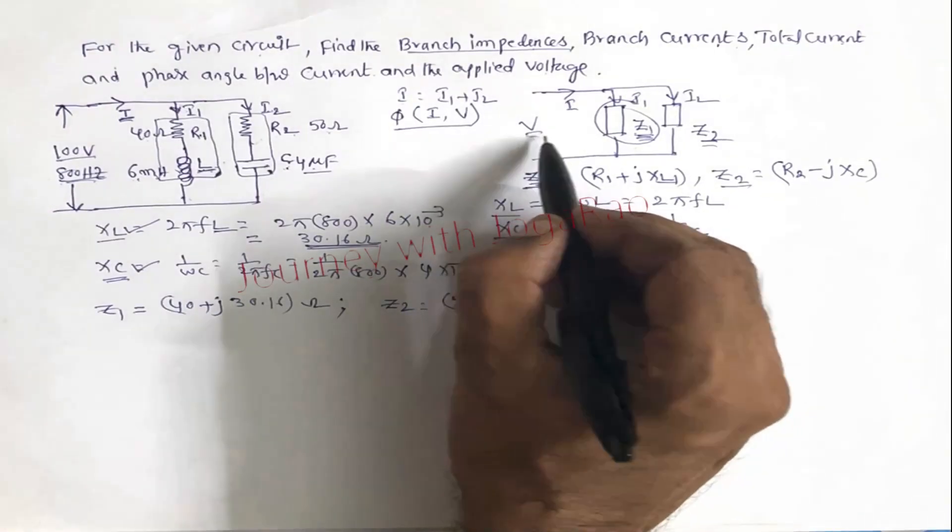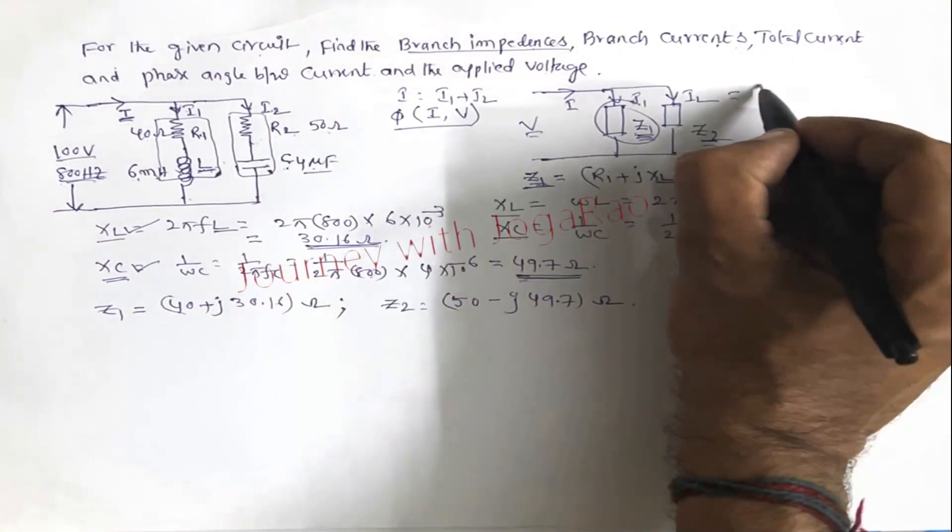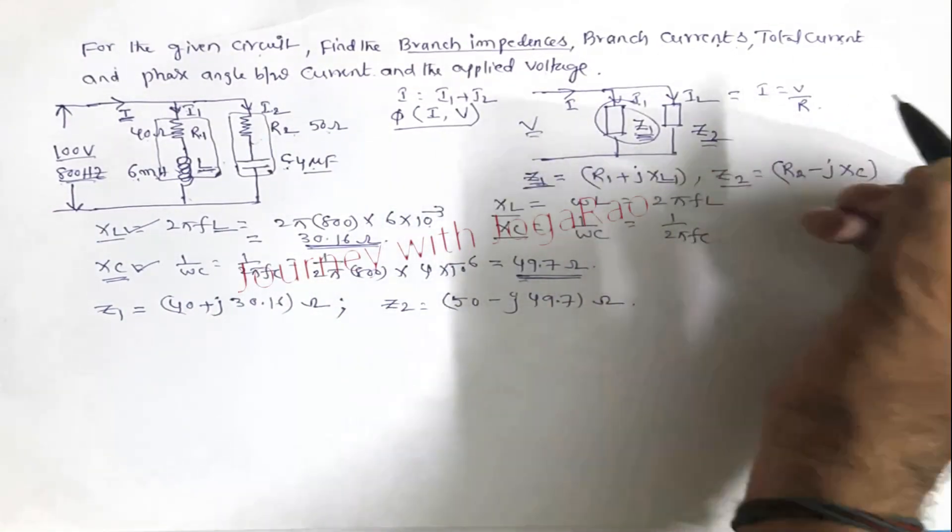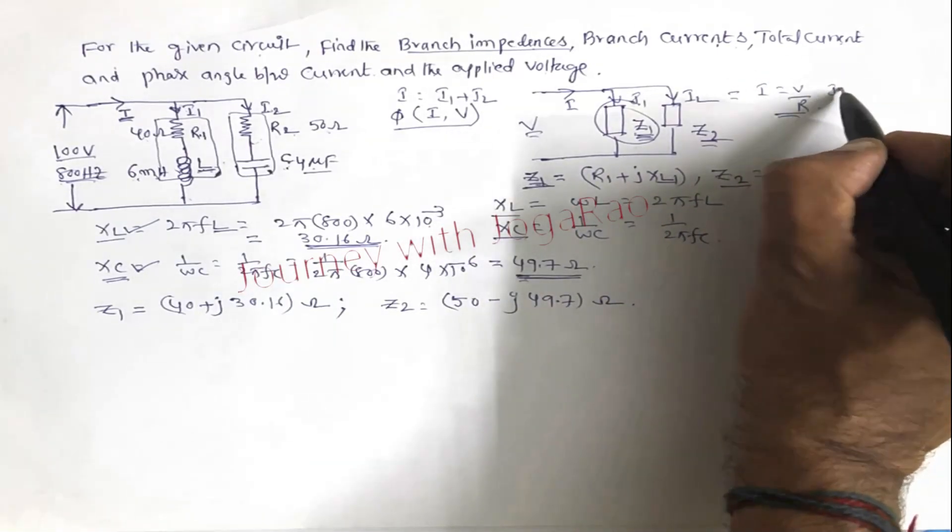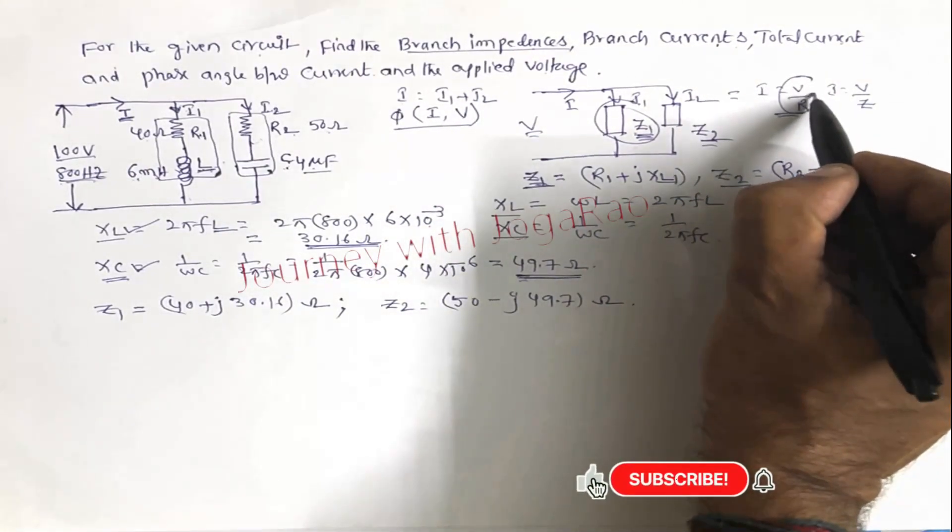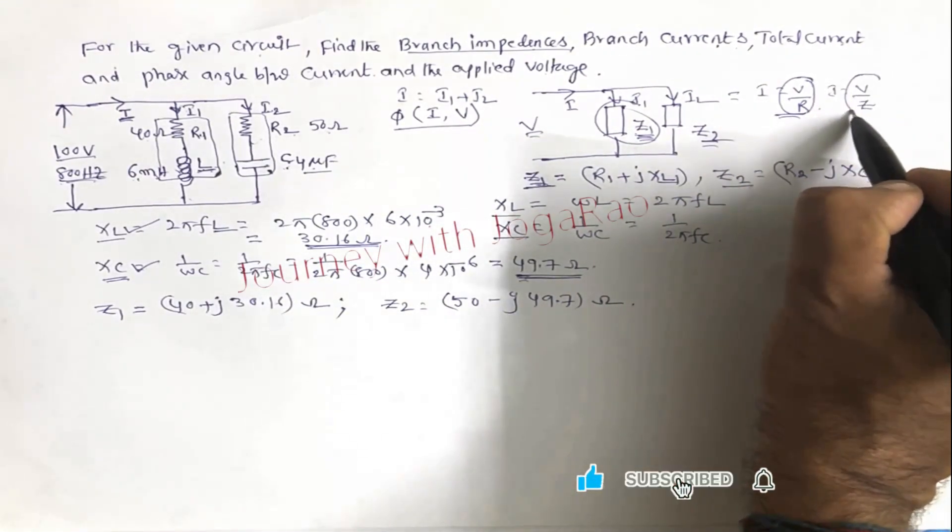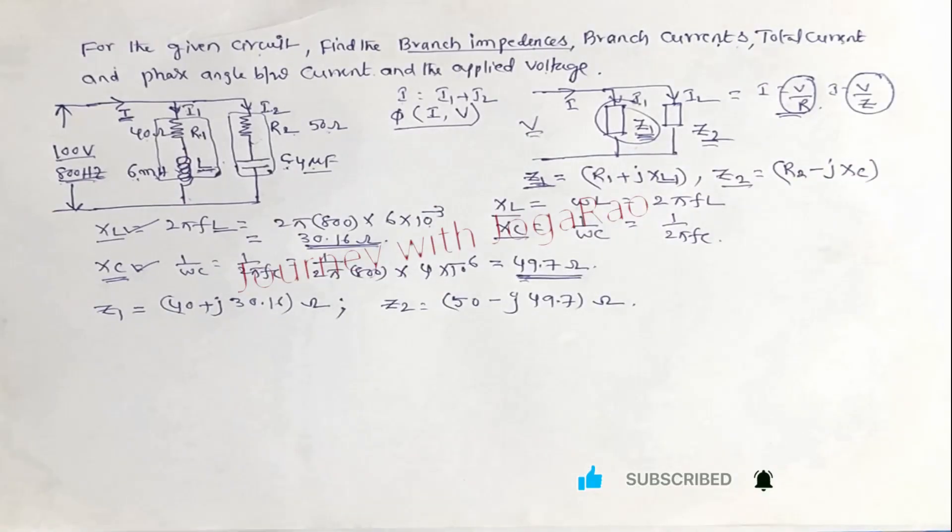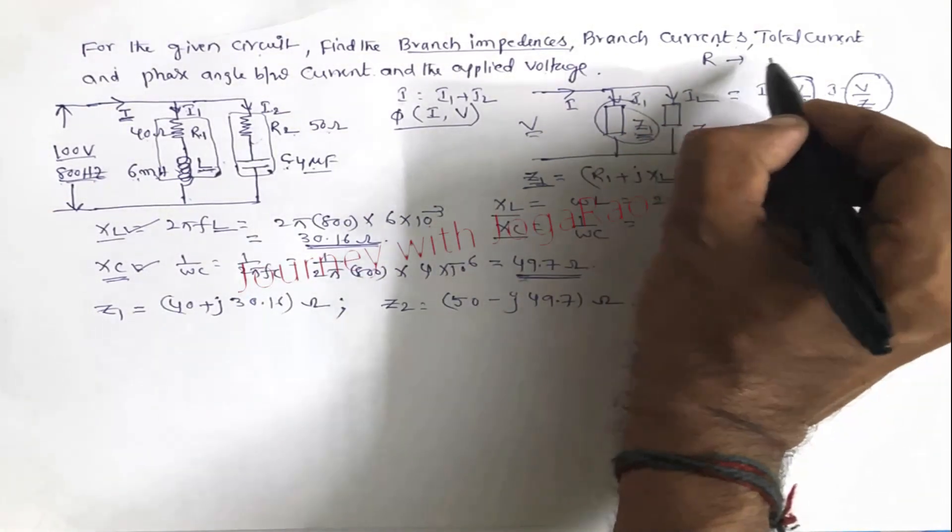Now when voltage is given, current is found by I equal V by R. In DC analysis it's V by R where R is ohms law. In AC analysis, I is equal V by Z. DC analysis is V by R is simple. AC analysis is V by Z. R is replaced with Z.